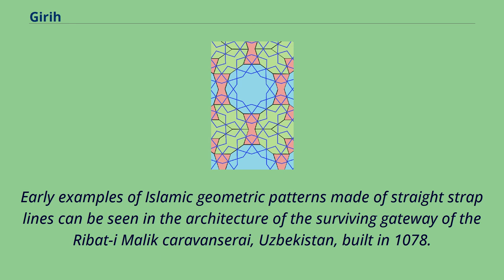Early examples of Islamic geometric patterns made of straight strap lines can be seen in the architecture of the surviving gateway of the Ribat-i Malik Caravanserai, Uzbekistan, built in 1078.